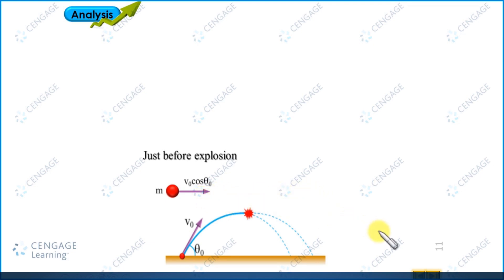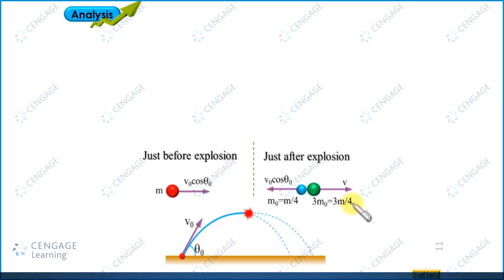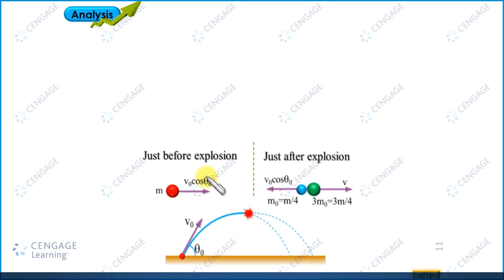Now let us analyze the heavier part. The heavier part has mass 3m naught and its velocity is unknown. We assume the unknown velocity is in the rightward direction with magnitude v. At the topmost point, if we consider this object as a system, there is no external force acting on the system in the horizontal direction. That means the linear momentum of the system should be conserved — linear momentum just before explosion equals just after explosion. Let us consider the rightward direction as positive.